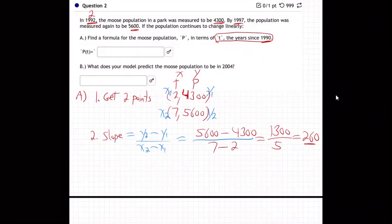Because the Y is mooses, the population of mooses, and this is years. 260 mooses per year. That's how much it goes up by on average. 260 more moose every year.